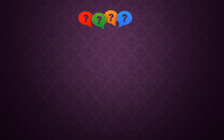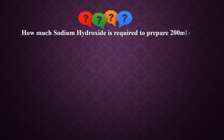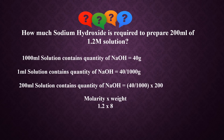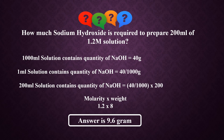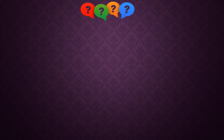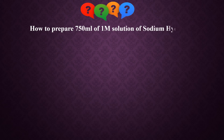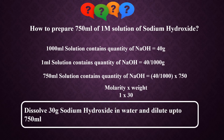Can you prepare these solutions now? How much sodium hydroxide is required to prepare 200 milliliters of 1.2 molar solution? The answer is 9.6 grams. How do you prepare 750 milliliters of 1 molar solution of sodium hydroxide? Dissolve 30 grams of sodium hydroxide in water and dilute the solution up to 750 milliliters.